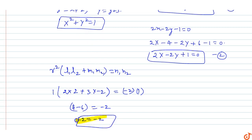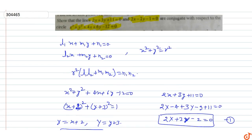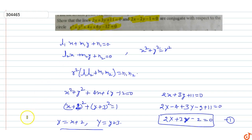Therefore, the two lines are conjugate with respect to the circle x² + y² + 4x + 6y − 12 = 0. This completes the proof.